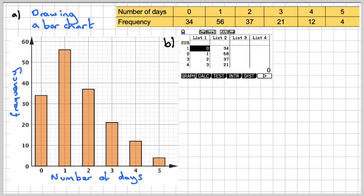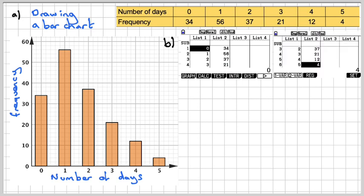We use the Casio calculator. So in the statistics mode, if you put in list 1 the number of days, and list 2 the frequency, and then if you press CALC, then this will come out.